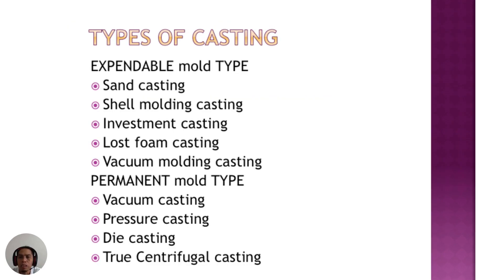Metal casting can be categorized into two types, which are expandable mold and permanent mold. The expandable mold type means that the mold needs to be broken in order to remove the casting, and the common mold material is sand or ceramic.